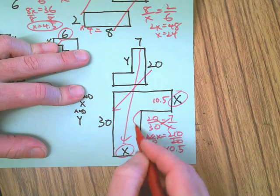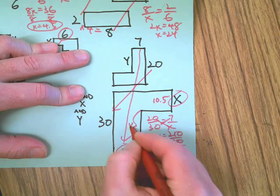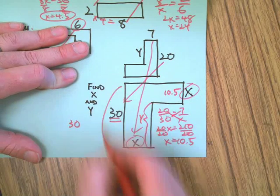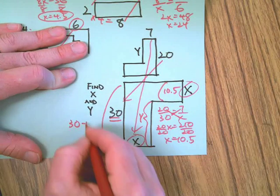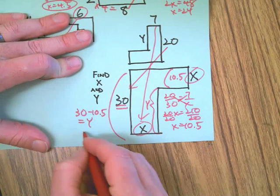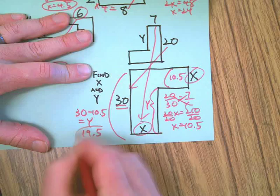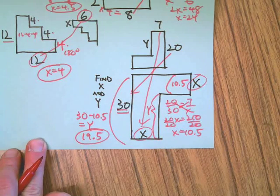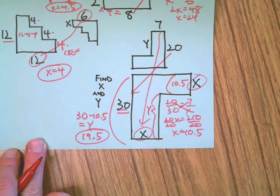So thirty, this side, minus that is going to equal Y, and that is 19.5. Fun video number one over. Stay tuned for video number two. Happy studying.